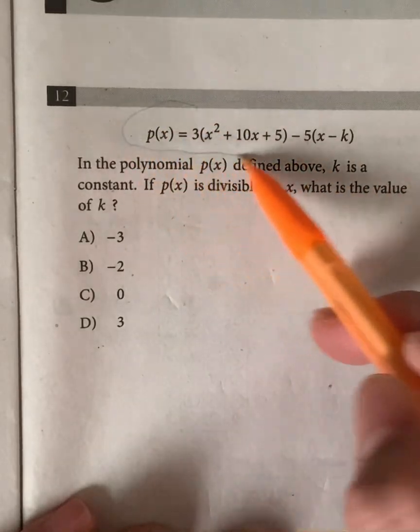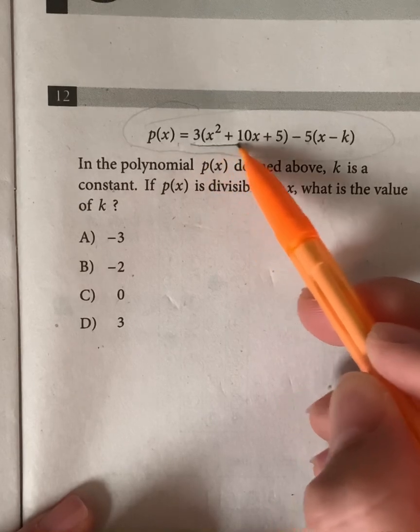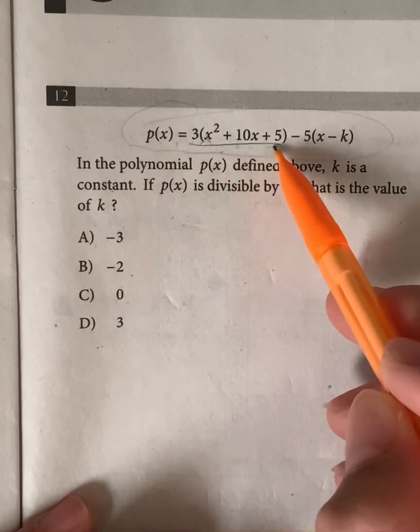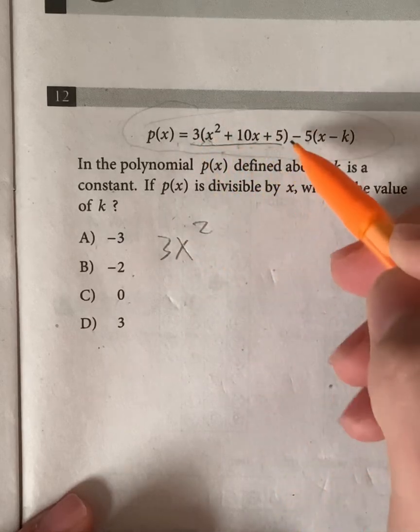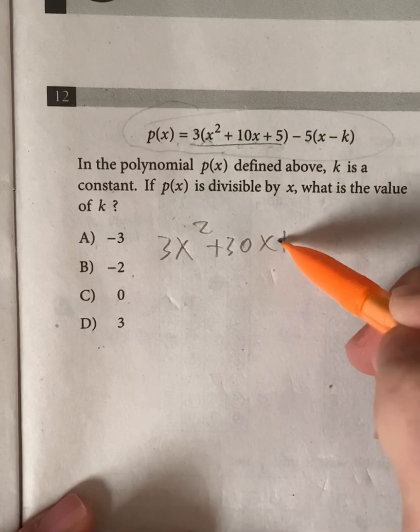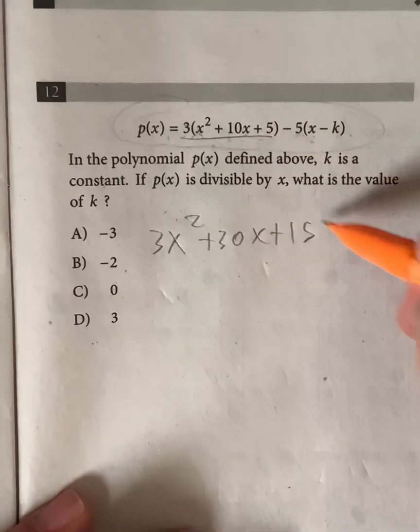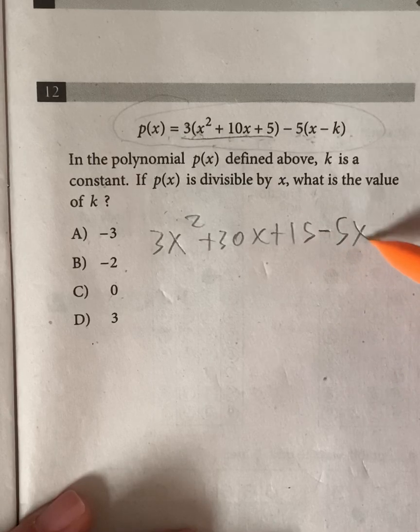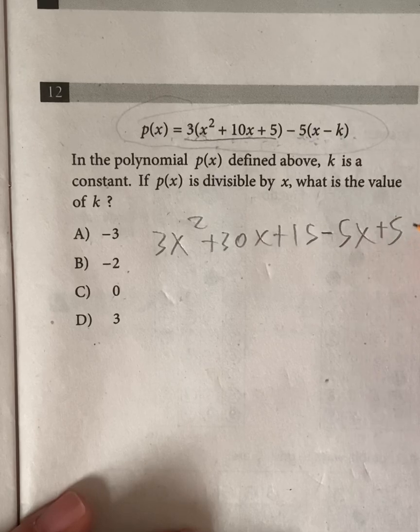So this equation is divisible by x. Let's just simplify it first. So we distribute the 3 to these terms x squared plus 10x plus 5. We'll be left with 3x squared. 3 times 10x is 30x. And 3 times 5 is 15. And now let's distribute the 5 into x minus k. It's going to be minus 5x. And negative 5 times negative k is going to give us plus 5k.